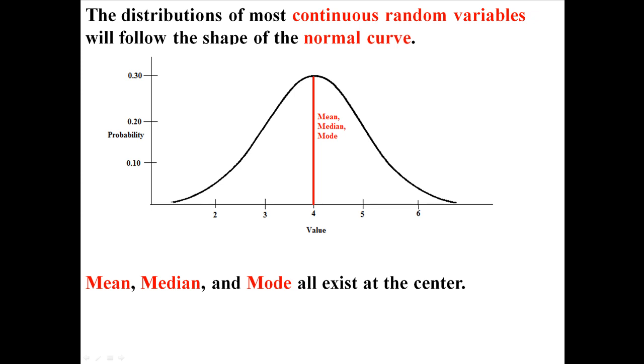And in this graph, in a perfectly normal curve, the mean, median, and mode all exist at the center. So for this curve, 4 is the mean, median, and the mode. Remember, those are measures of central tendency.